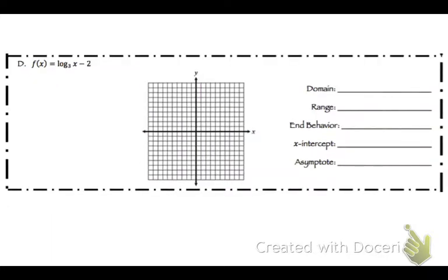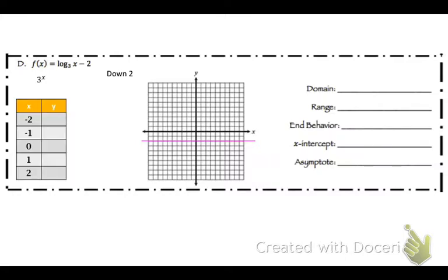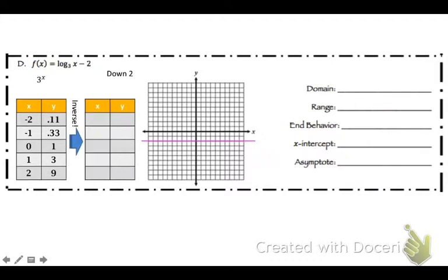Let's do one more: log base 3 of x minus 2. Inside is left and right; outside is up and down. That minus 2 is on the outside — no parentheses — so it moves the graph down 2. I go down 2 and draw my new axis there. Making the table for 3 to the x: 0.11, 0.33, 1, 3, 9. Invert: x becomes 0.11, 0.33, 1, 3, 9 and y becomes negative 2, negative 1, 0, 1, 2. Graphing: (0.11, −2), (0.33, −1), (1, 0), (3, 1), (9, 2).